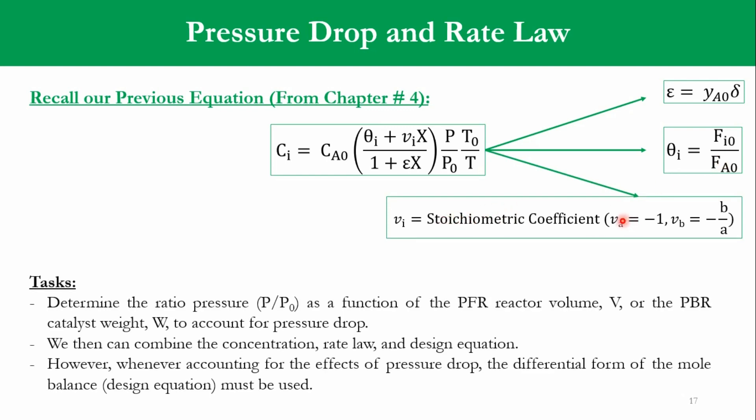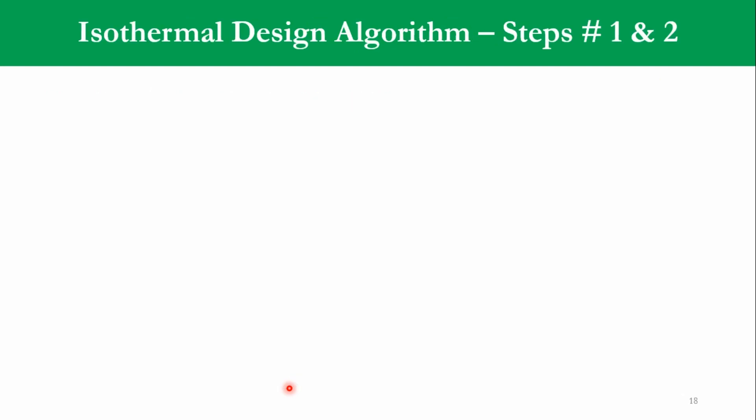Now what is our task or what we have to derive? Determine the pressure ratio P/P0 as a function of the PFR reactor volume or PBR catalyst weight to account for the pressure drop for the gas phase reactions, obviously. Then we can combine the concentration, rate law, and design equation. And if you remember our previous lecture where we had said that once there is no pressure drop, we will consider the integral form of equation. But once there is a pressure drop or heat exchange, we will consider the differential form equation. So that is written over here as well.